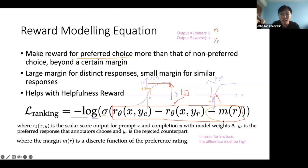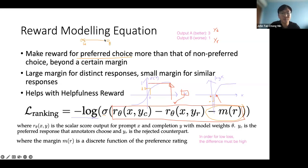In the original RLHF there's no margin term — you just want the preferred response to score better than the other. What they realized — and this comes from contrastive learning — is to add a margin M. If the reward difference between the better and worse response is greater than M, we don't penalize the model at all. If the difference is smaller than M, there's a positive loss. This is essentially a hinge loss, ensuring the better reward is pushed beyond a certain threshold from the worse one.